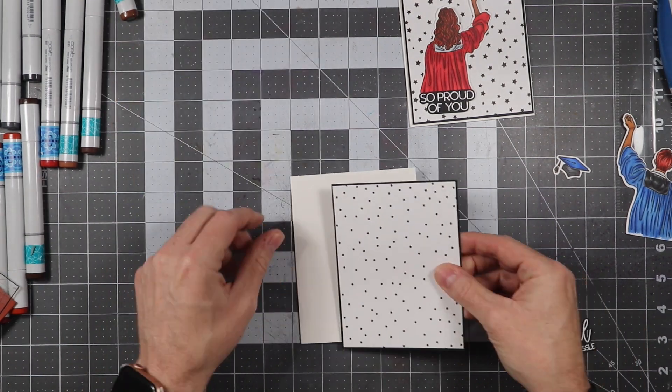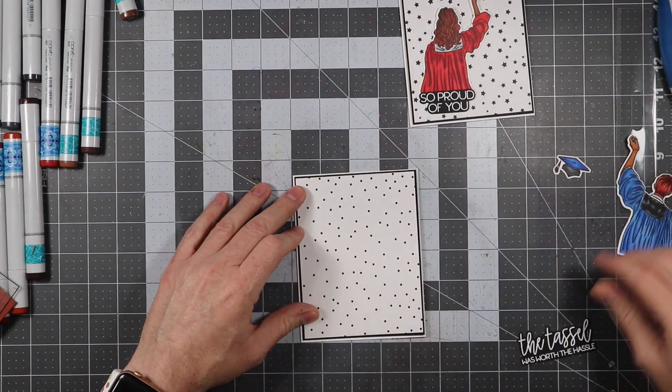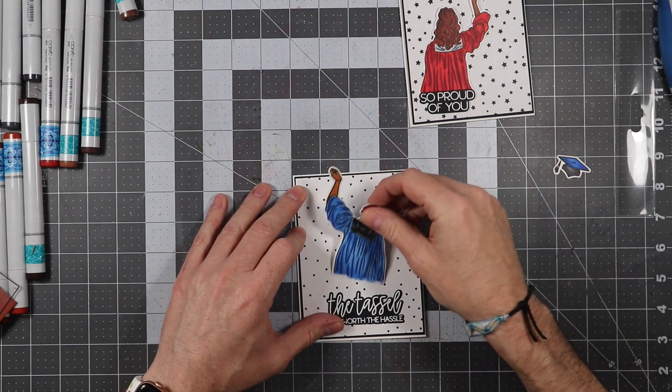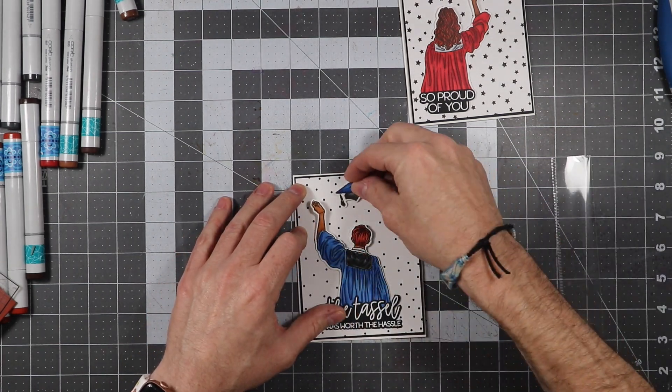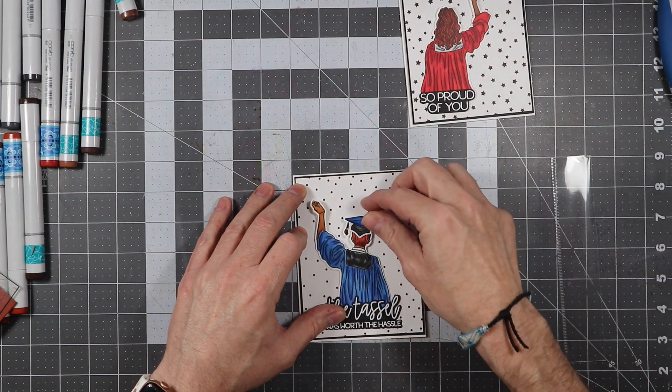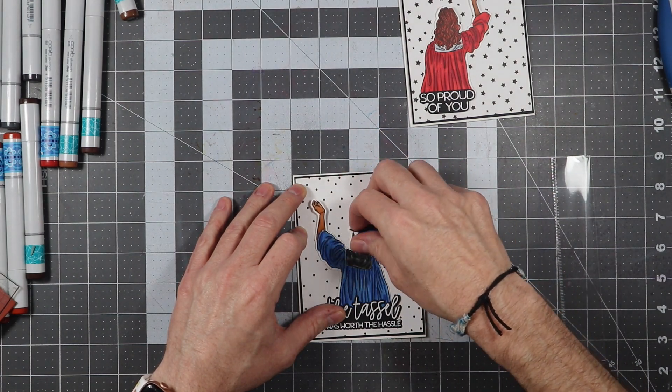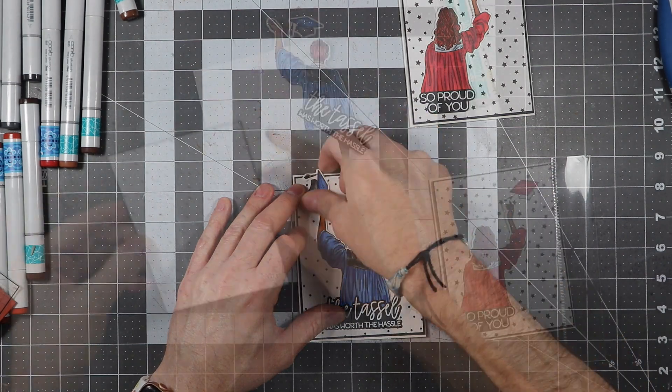So I'm basically putting the cards together here, and I'll go ahead and do the final versions here. I want to see exactly where I want everything, because you guys, once you glue something down, it's almost impossible to get it to be picked back up.